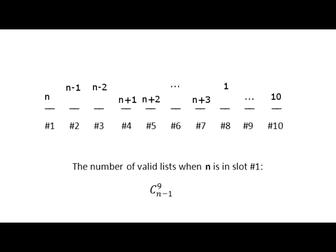Since sublist 1, 2, up to n minus 1, in the decreasing order, can occupy any n minus 1 places out of 9 places from 2 to 10, there are C 9 choose n minus 1 ways to place the numbers in this sublist.